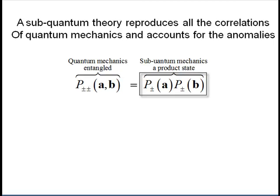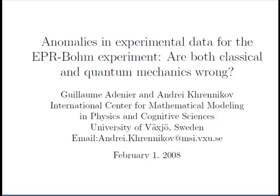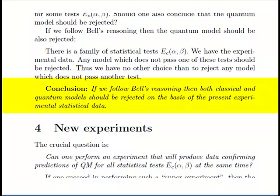So what are the anomalies? Adenier and Krennikov re-analyzed the 1998 data of Gregor Weiss. They found that whereas the overall correlation agrees with experiment, the joint probabilities, or the coincidences, display anomalies. Since quantum mechanics is used to calculate these, and since they do not agree with quantum mechanics, then the whole of Bell's theorem is cast into doubt. Adenier and Krennikov conclude: If we follow Bell's reasoning, then both classical and quantum models should be rejected on the basis of present experimental statistical data.